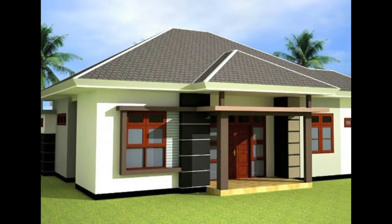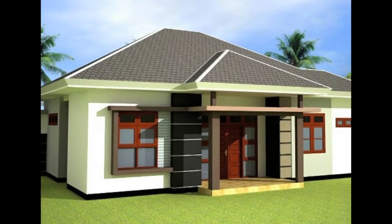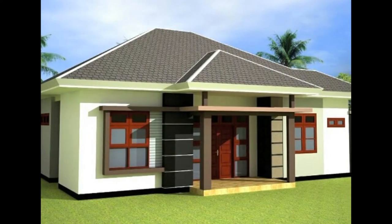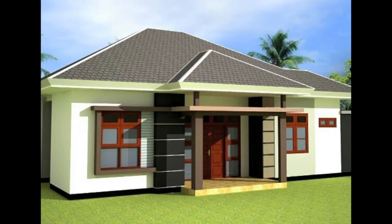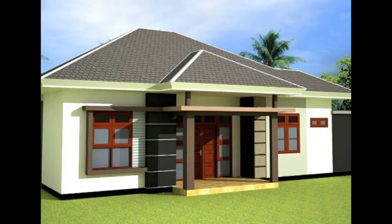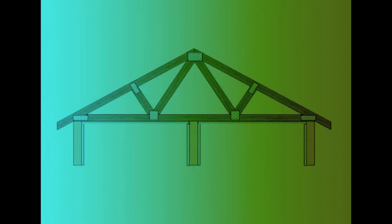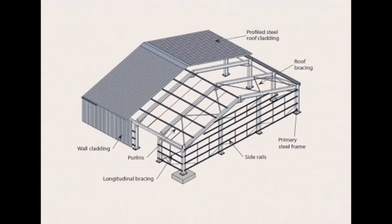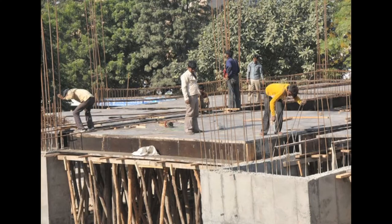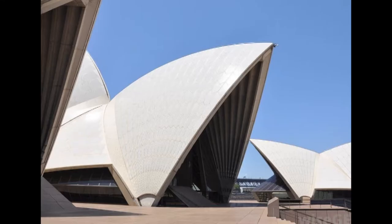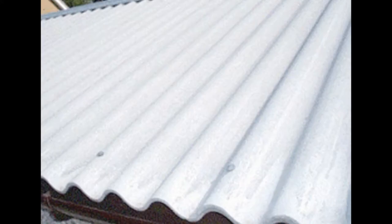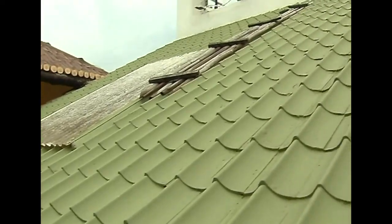A roof is a flat or sloped cover at the top of the building constructed in the form of a framework to give protection against rain, heat, snow, winds, etc. A roof basically consists of structural elements provided at the top of the building for the support of roof covering. The structural elements may be trusses, portals, beams, slabs, shells, or domes. The roof covering may be of AC sheets, GI sheets, tiles, slates, or slabs.